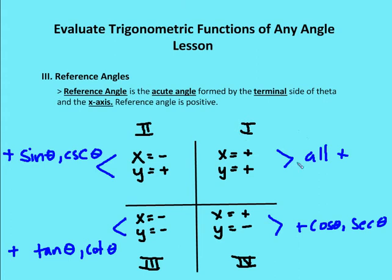If you lay this out, you'll see that all trig functions are positive in the first quadrant, sine and cosecant are positive in the second quadrant, tangent and cotangent are positive in the third quadrant, and cosine and secant are positive in the fourth quadrant.